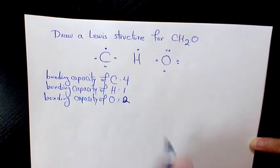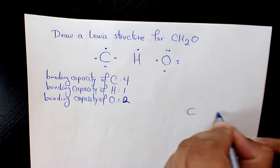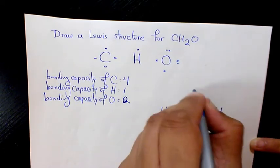So since carbon has the largest number or highest number of bonding capacity, that's going to be the central atom. So we place it like C, H, H, and O.